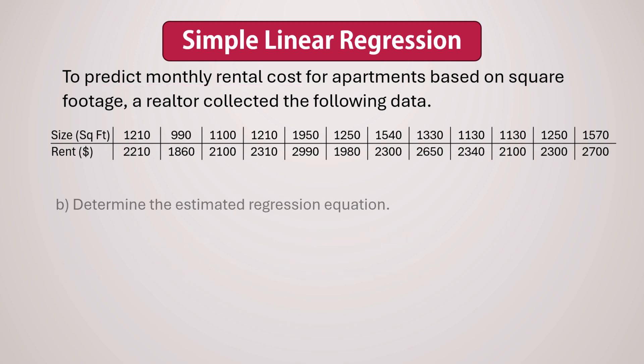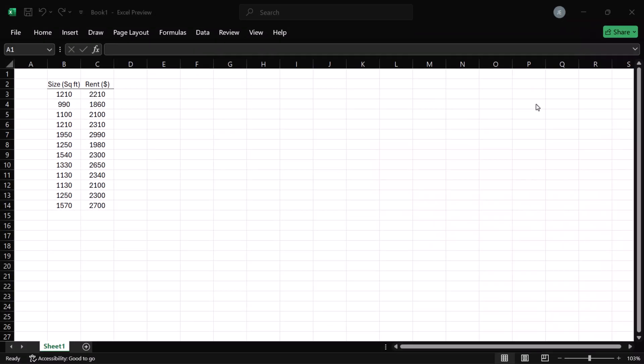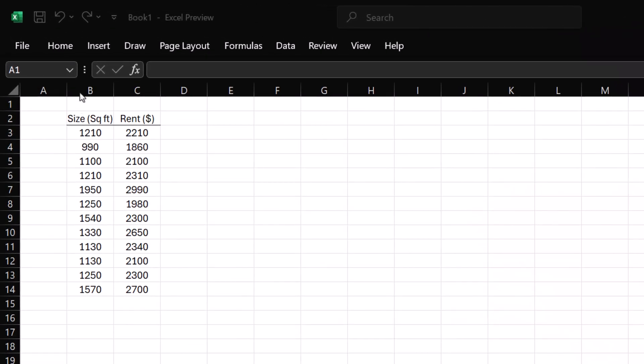Next, to determine the regression equation, we can use these formulas to obtain the slope and the Y intercept. But we use data analysis in Excel to generate a more detailed regression output. Here in Excel, I'm going to first create a scatter plot.